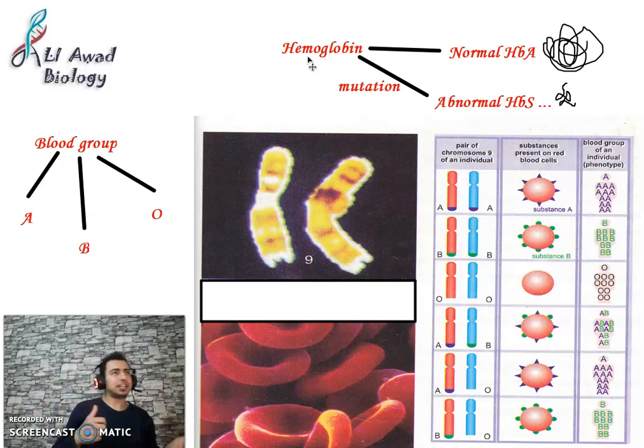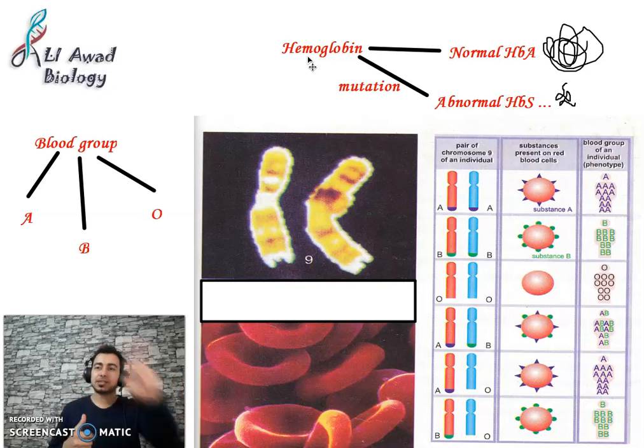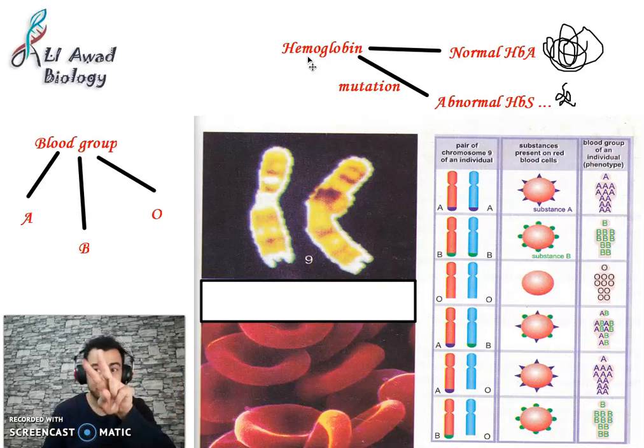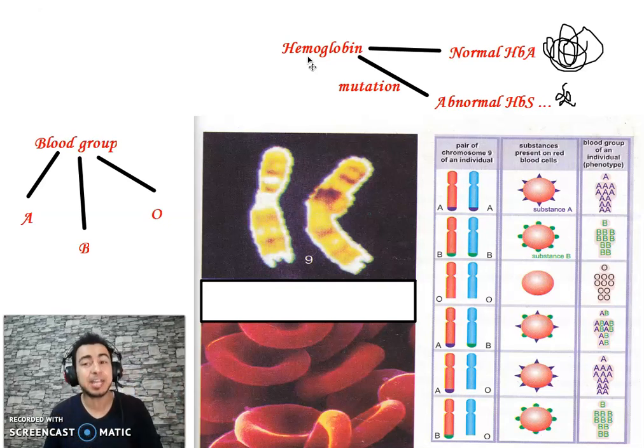The DNA of HbA is different from the DNA of HbS — they are two different forms of the same gene. We call these alleles.